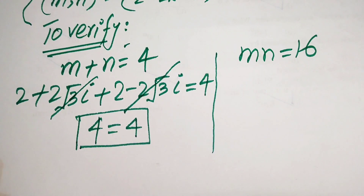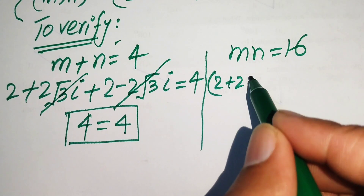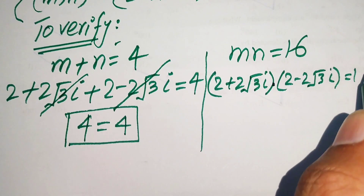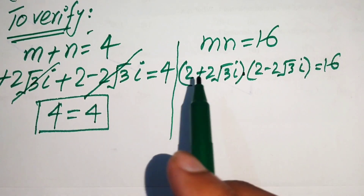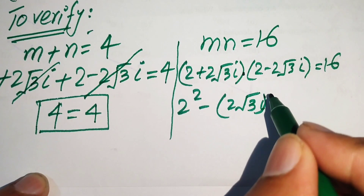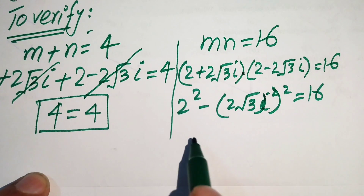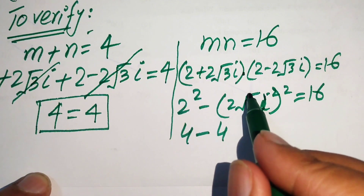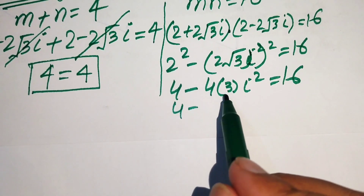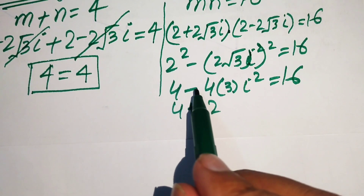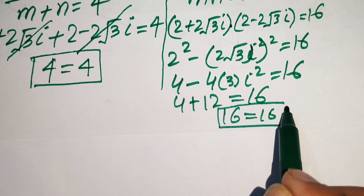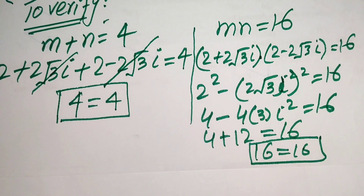For equation two, we compute m times n: (2 plus 2 square root of 3 iota) times (2 minus 2 square root of 3 iota) equals 16. Using the identity (a+b)(a-b) = a² - b², this equals 2 squared minus (2 square root of 3 iota) squared, which is 4 minus 4 times 3 times iota squared. Since iota squared equals minus 1, this becomes 4 minus 12 times (minus 1) equals 4 plus 12 equals 16. Verified.